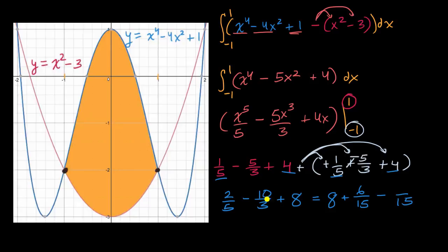And then ten-thirds, if we multiply the denominator times five, we have to multiply the numerator times five. So it's going to be fifty-fifteenths. And so what's six-fifteenths minus fifty-fifteenths? So this is going to be equal to eight minus six minus fifty is minus forty-four. Minus forty-four over fifteen.